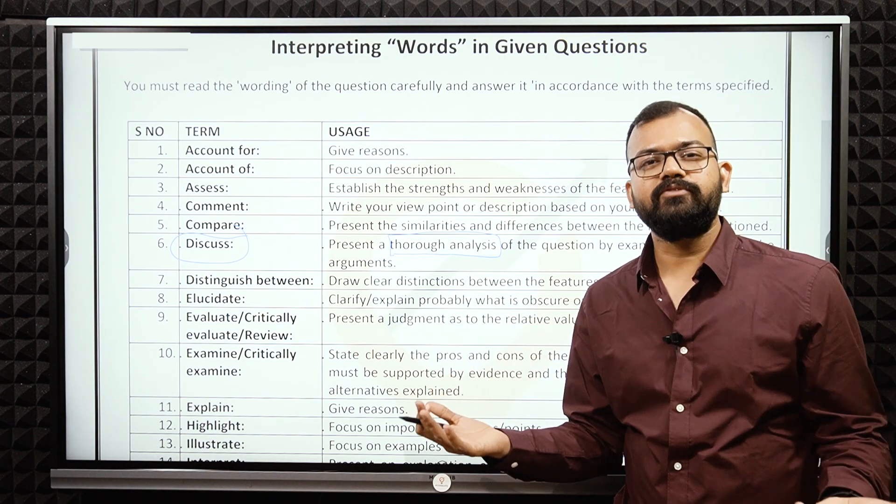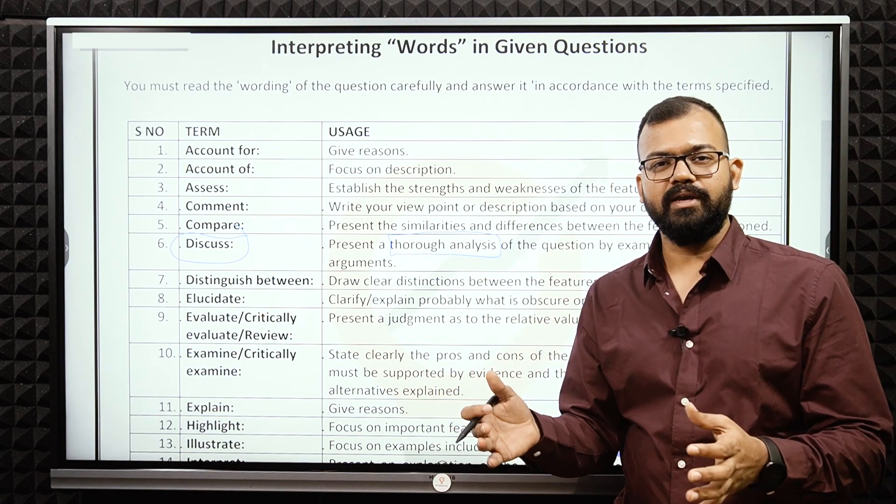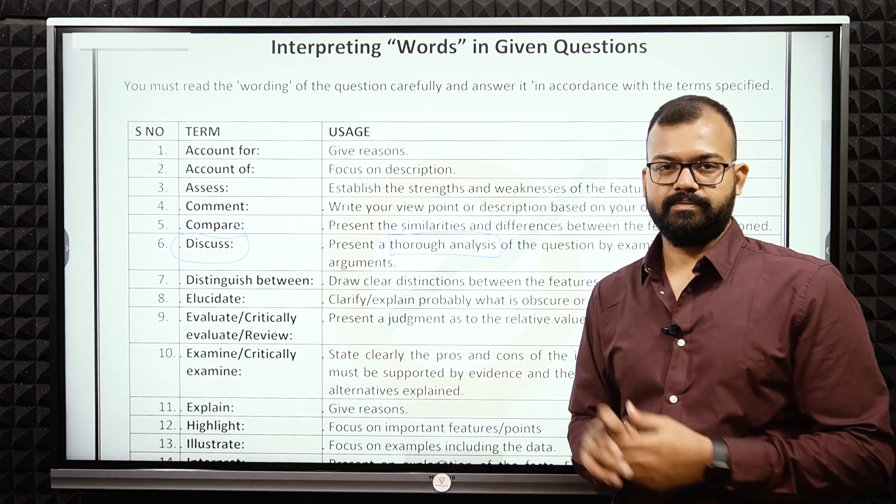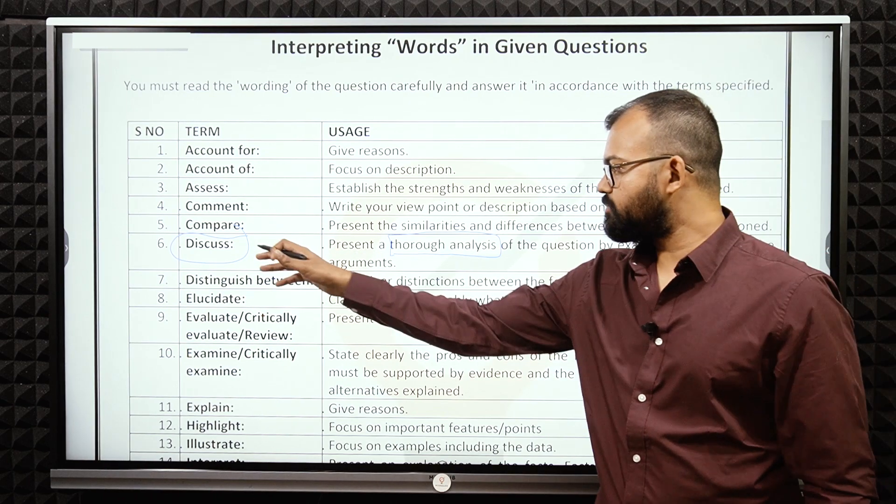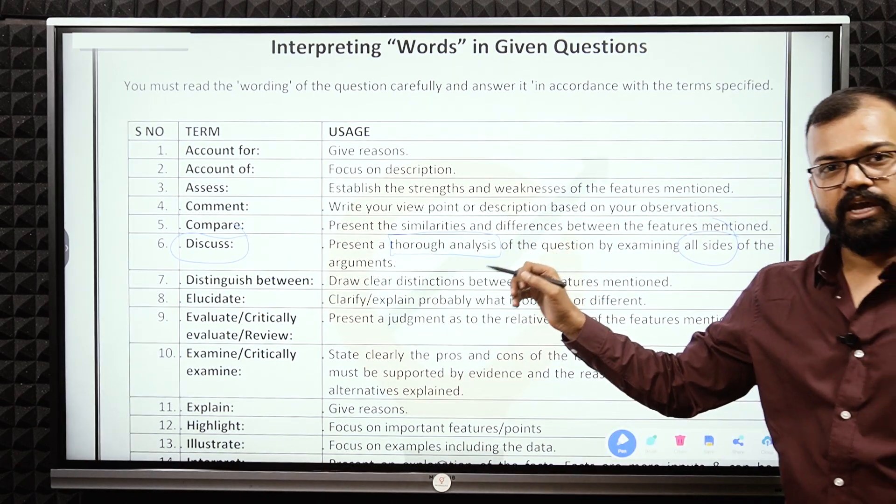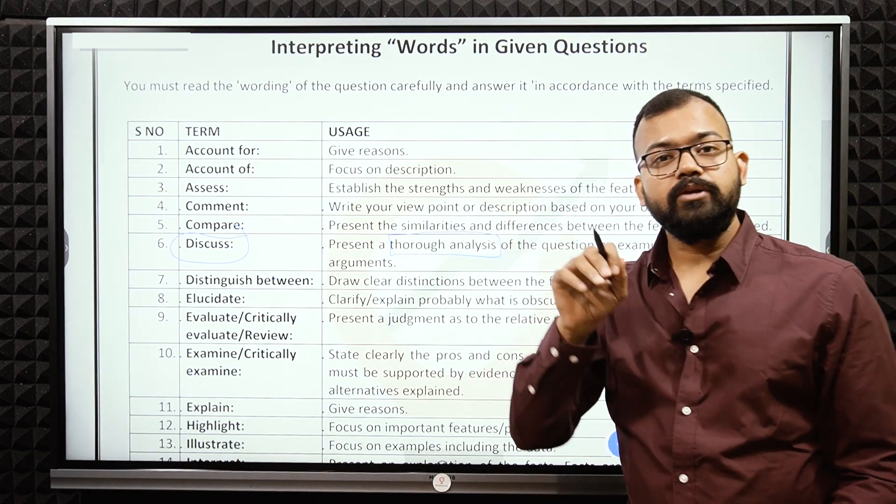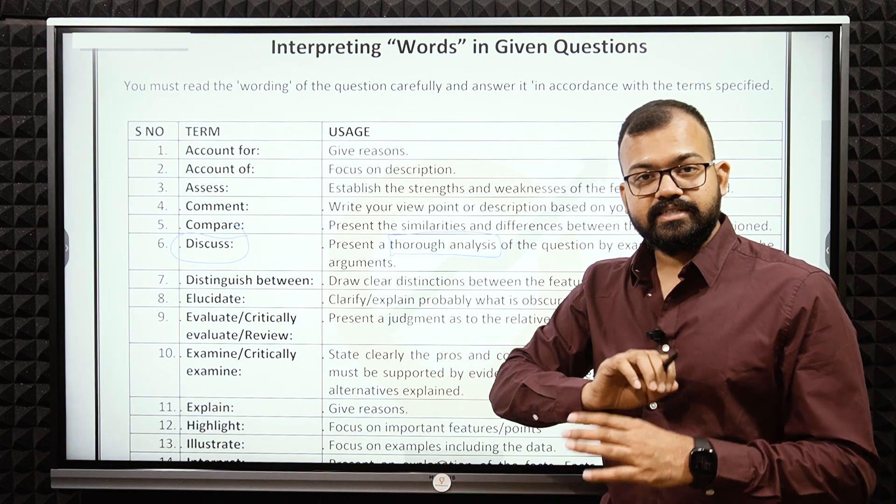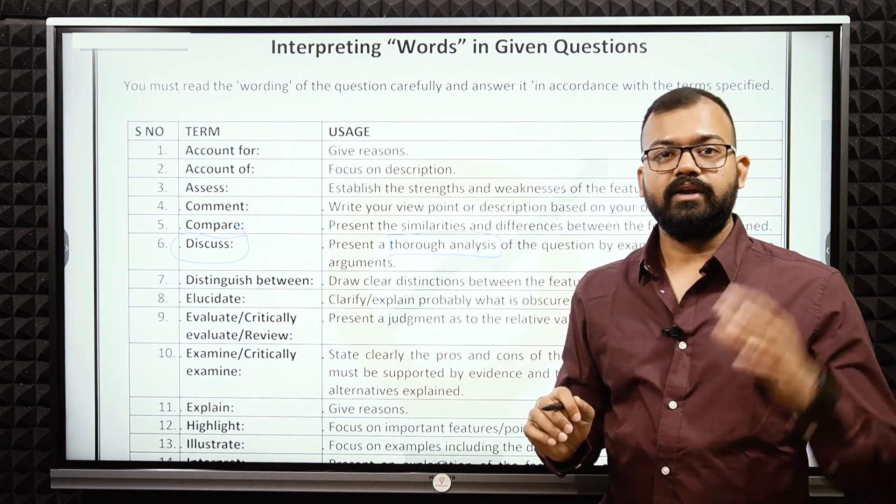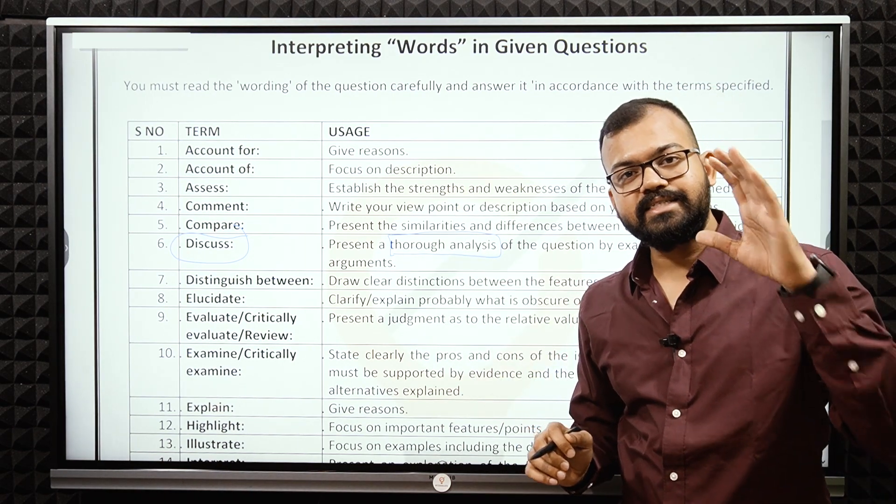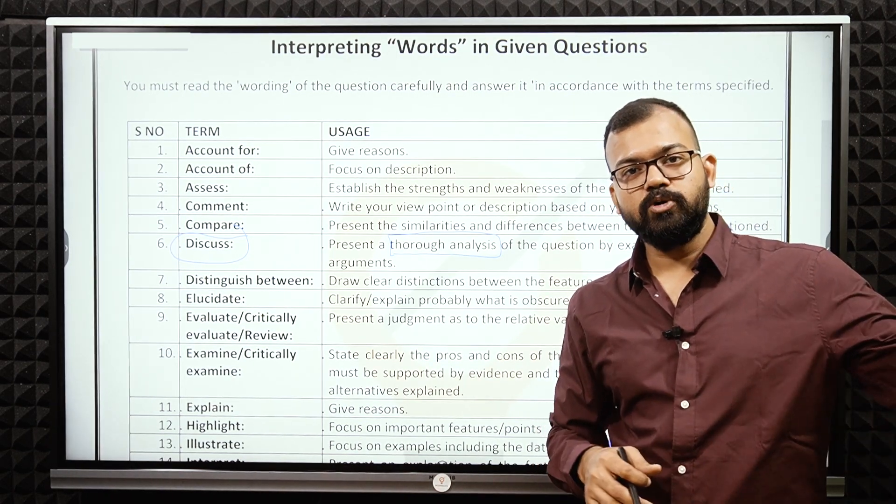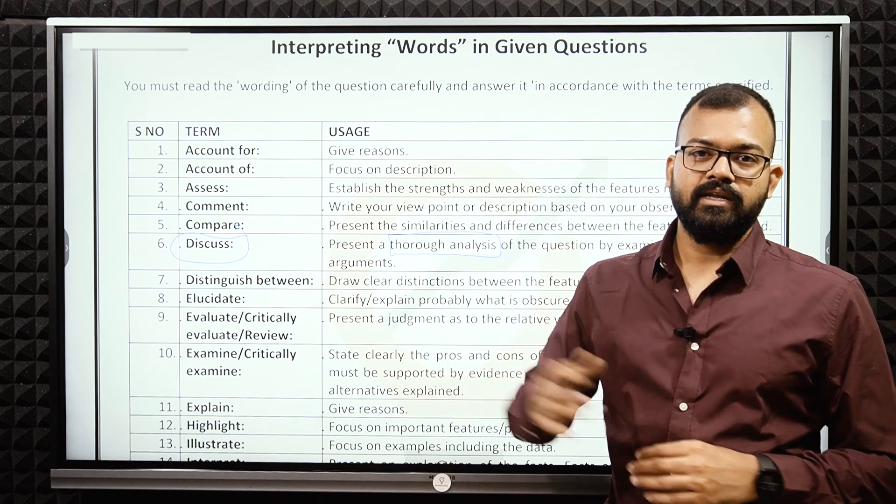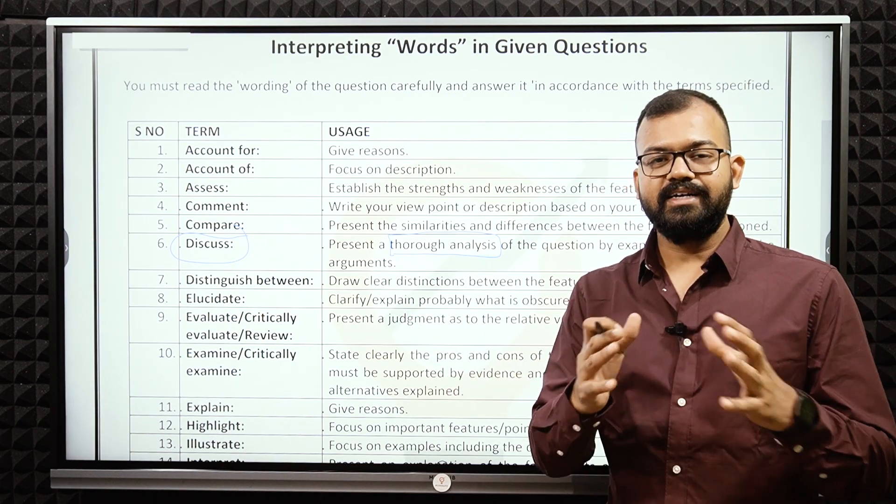These are two different types of conditions. When economy is not performing, why investors are investing? These kind of topics they can ask in discuss. Discuss means present a thorough analysis. It means you have to analyze why economy is going down, why recently inflation has gone up and why RBI is still having accommodative stance. Another issue: stock market is booming, investment is coming in, people are working from home.